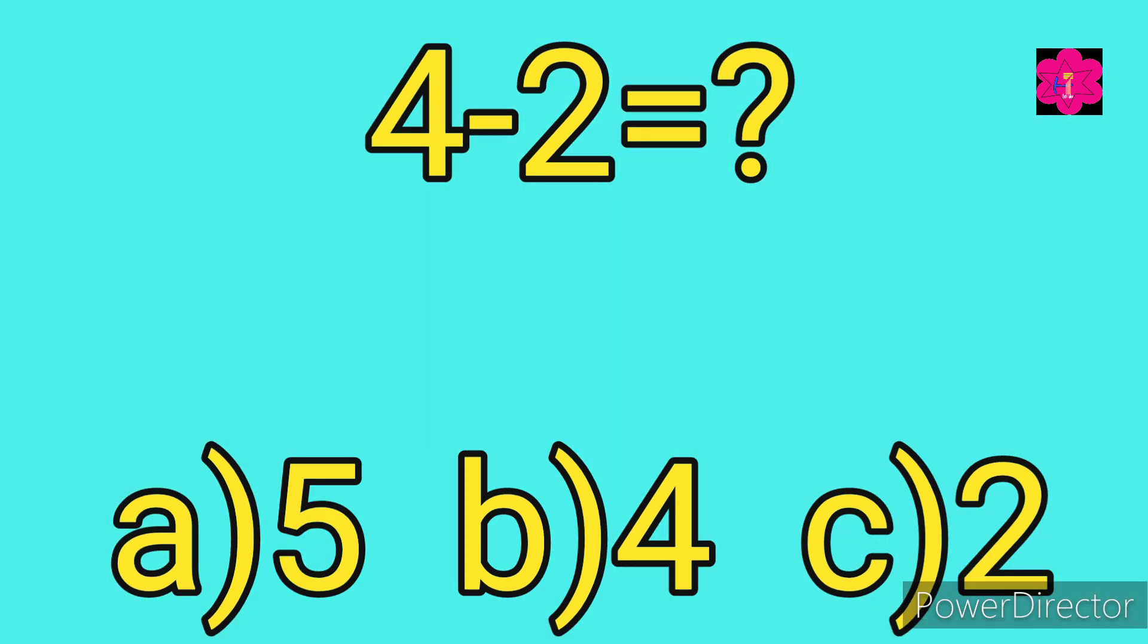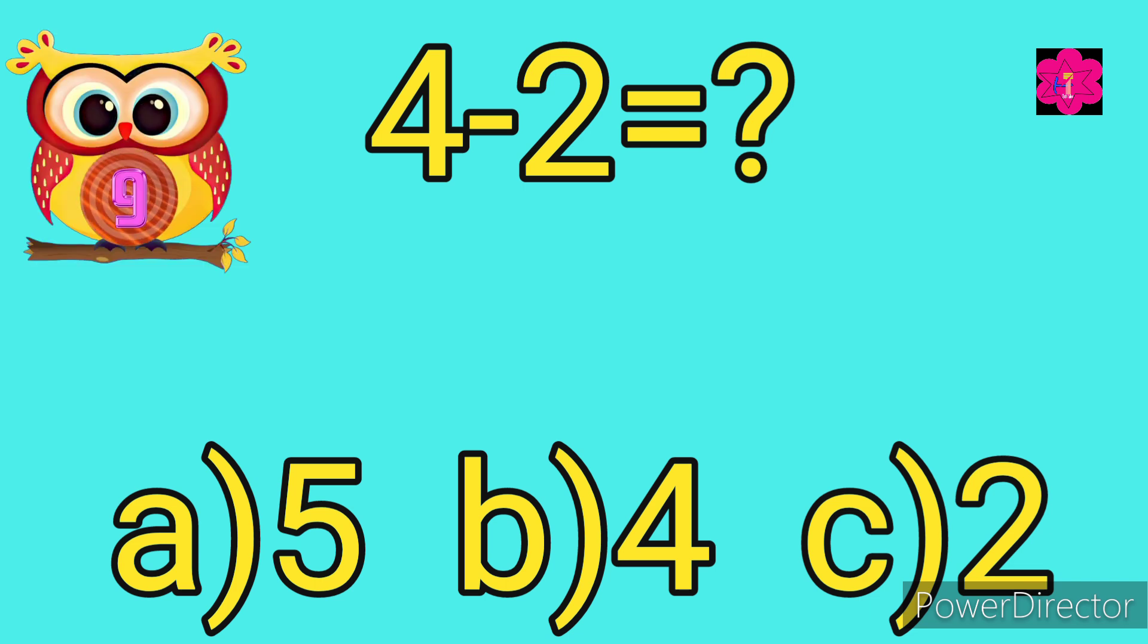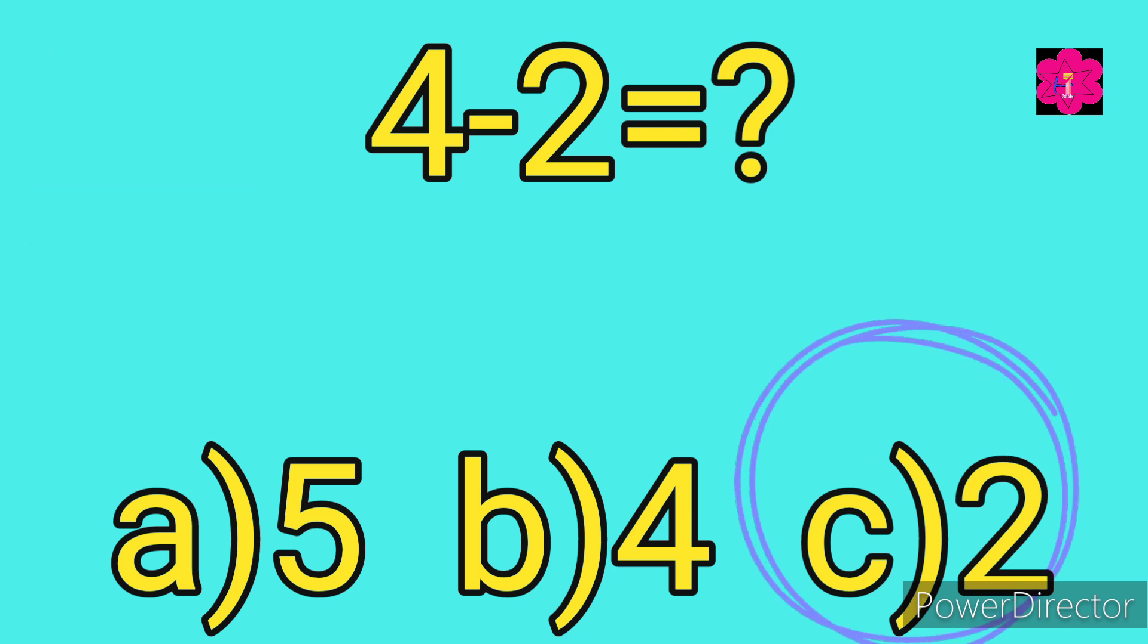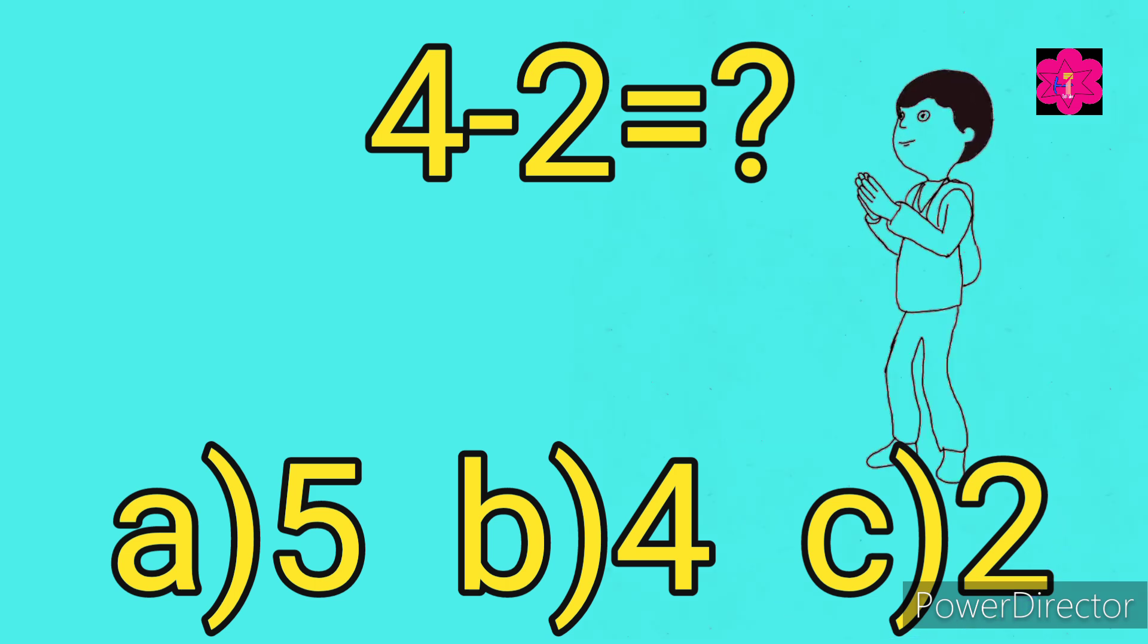What is 4 minus 2? Your options are a) 5, b) 4, and c) 2. Time starts now. Yes, correct answer is c) 2. Fabulous job kids.